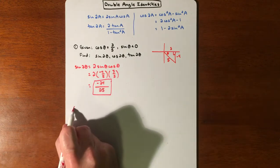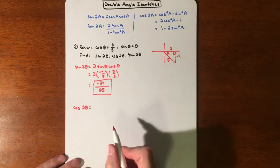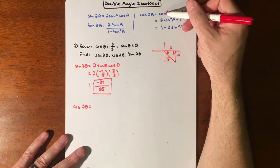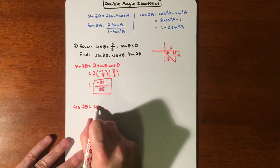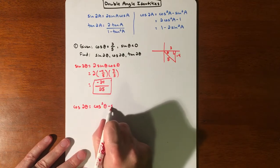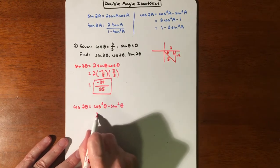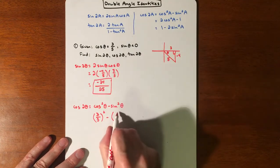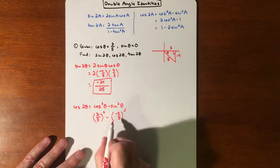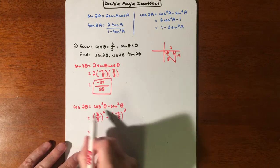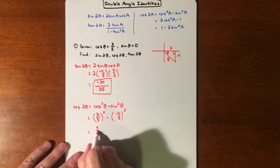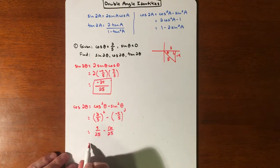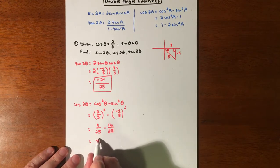All right, and then we'll do cosine 2θ. We could pick any one we want, really does not matter. So let's say we just take cos²(θ)-sin²(θ). That's going to be (3/5)² minus (-4/5)². That equals 9/25 minus 16/25, which is -7/25.